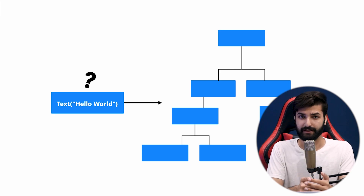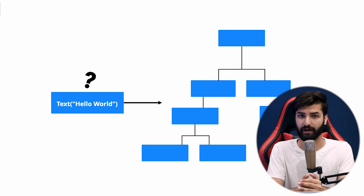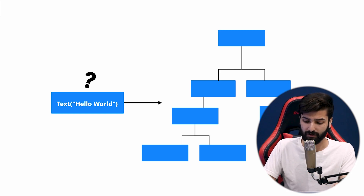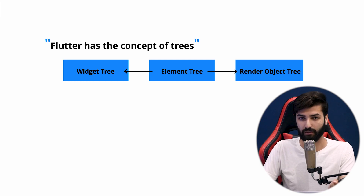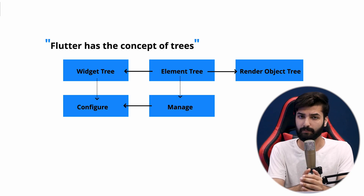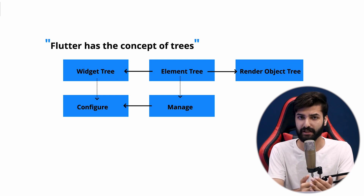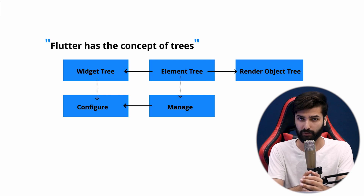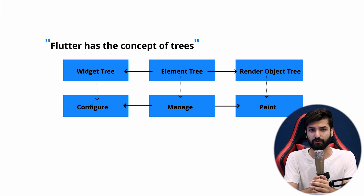In Flutter there is something more than just a widget tree. Flutter creates three parallel trees for rendering a widget on the UI: the widget tree, the element tree, and the render object tree. A widget in the widget tree is just the configuration — we define and configure the widget and nothing more. An element in the element tree, corresponding to each widget, is responsible for managing the necessary updates and life cycle of a widget and keeps all the information about it. The widget is then painted on the UI using the render object.